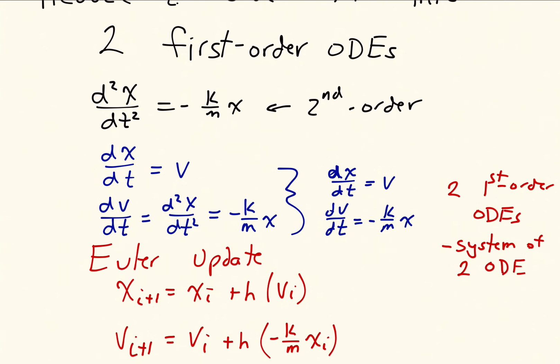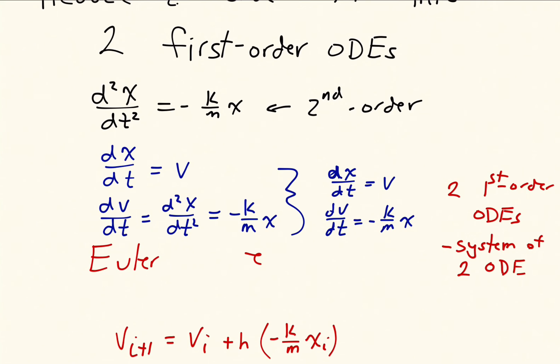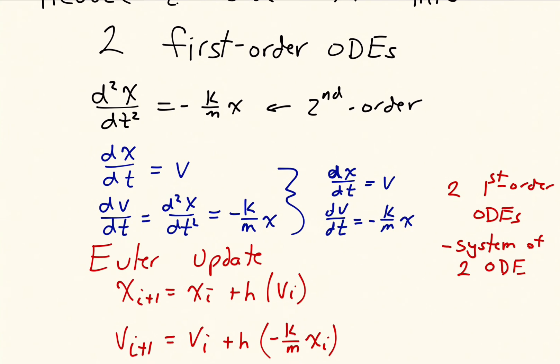We also have the update for the independent variable. For example, we still have the update equation for time, which is our independent variable for this equation. So we have t i plus 1 is equal to t i plus h. So those three equations, the equations for t, x, and v, where t is the independent variable, and x and v are the dependent variables.